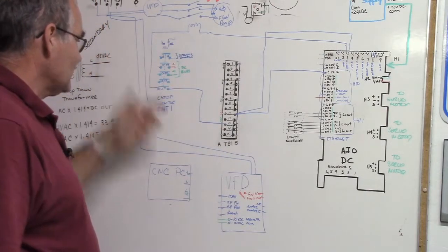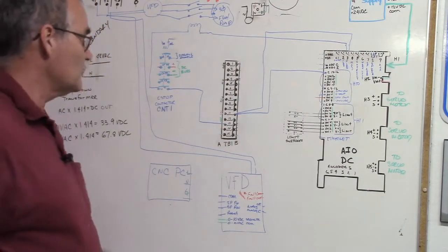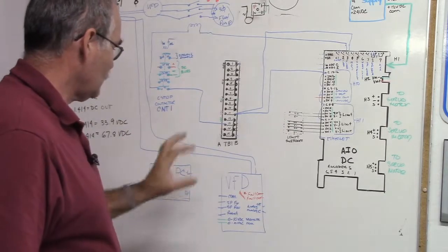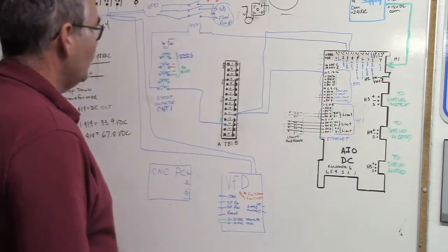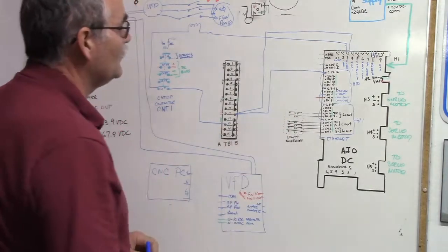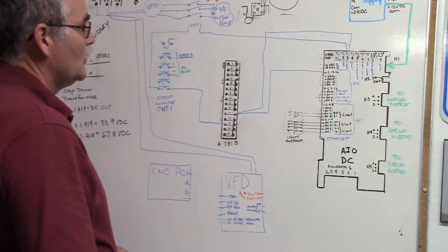So that's what the e-stop contactor does. We've covered e-stop contactor, the variable frequency drive, and given an example of a flood pump using the flood circuit. We can talk about the mist circuit. Let's do that next.